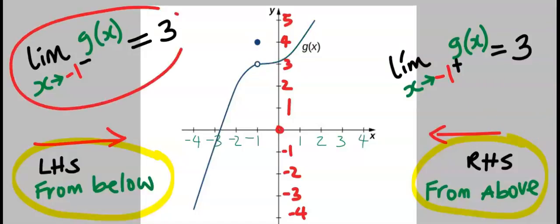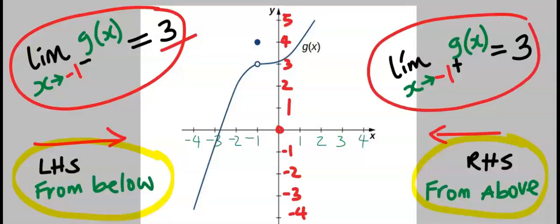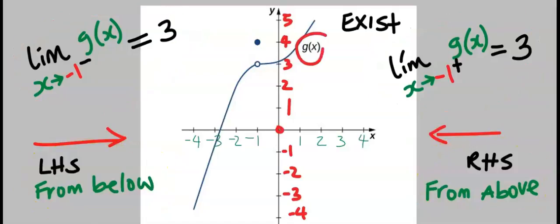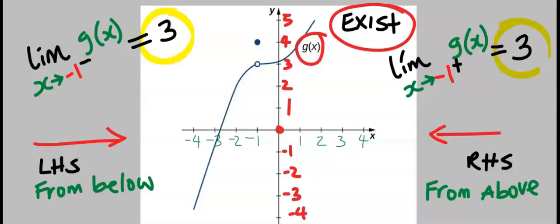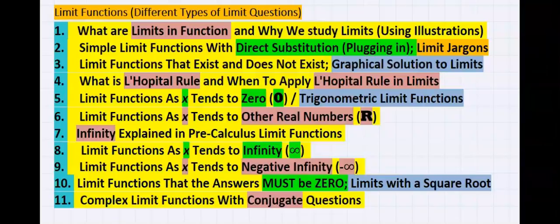This one-sided limit gave us 3 from the left. Likewise, this right side limit, which is also a one-sided limit, gave us 3. We conclude that g of s exists because both arms are equal. You can check out other videos